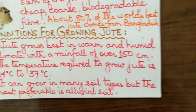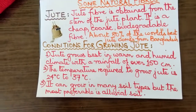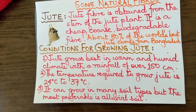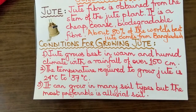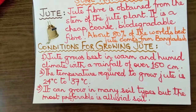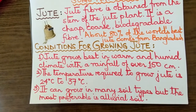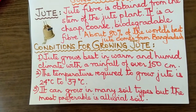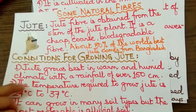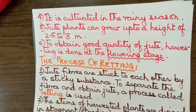About 80% of the world's best jute comes from Bangladesh. Jute grows best in warm and humid climate with a rainfall of over 150 centimeters. The temperature required to grow jute is 24 to 37 degrees centigrade. It can grow in many soil types, but the most preferable or ideal soil is alluvial soil, which is found near rivers. It is cultivated in the rainy season.